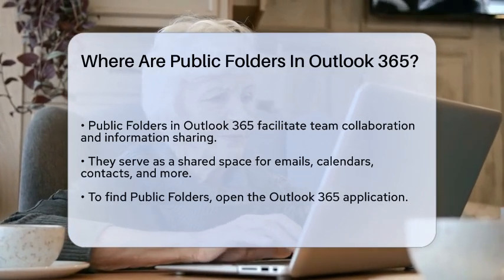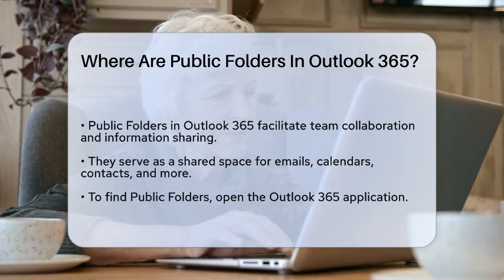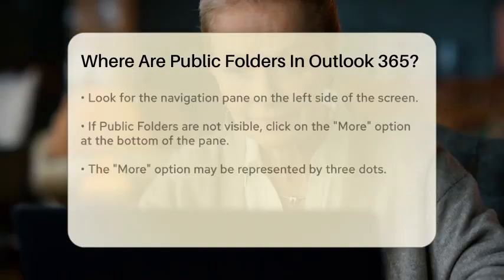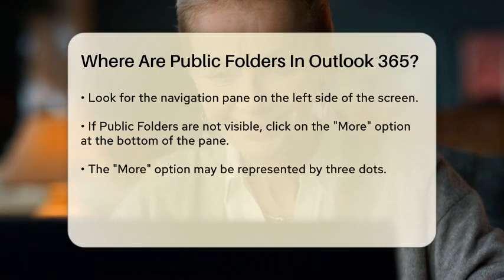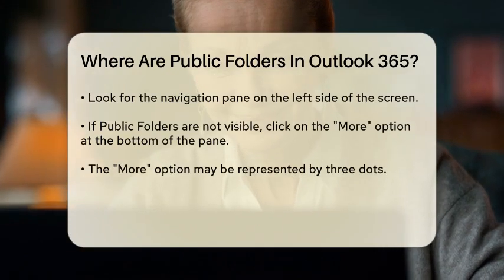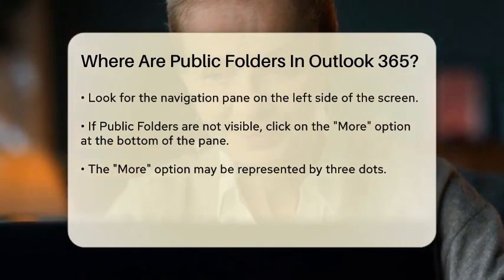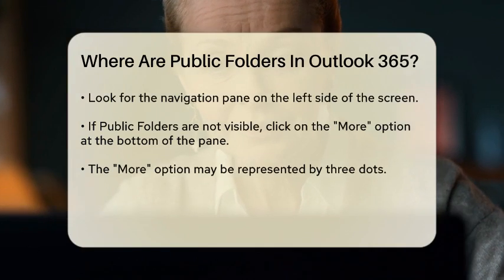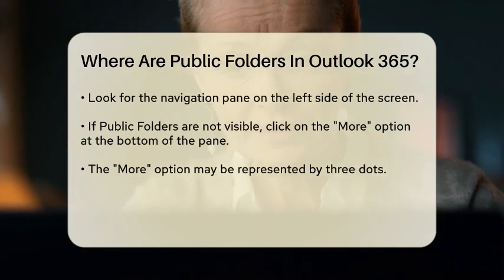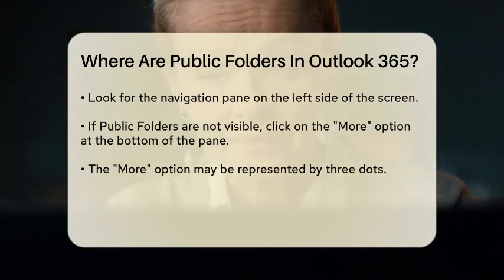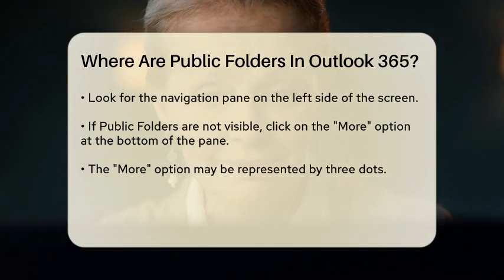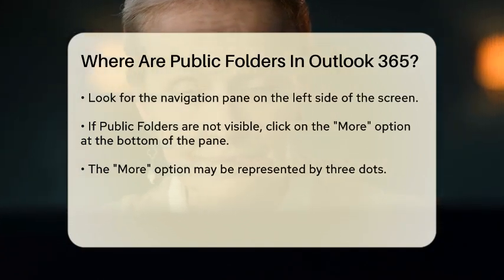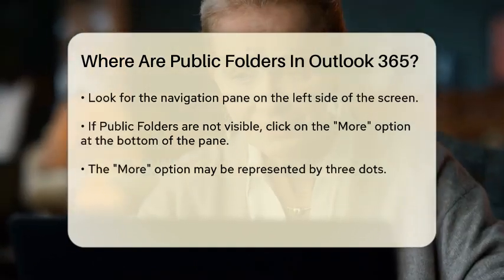But where can you find these public folders? To locate public folders in Outlook 365, start by opening the application. Look for the navigation pane on the left side of the screen. If you do not see the public folders option, you may need to enable it. Click on the More option at the bottom of the navigation pane, which may also be represented by three dots.